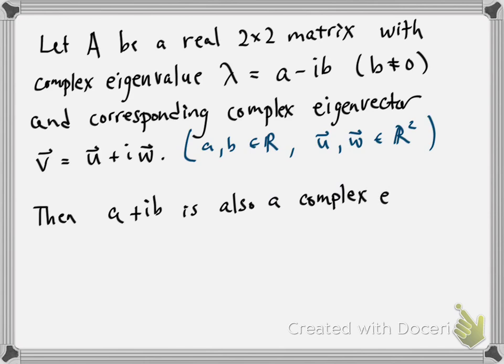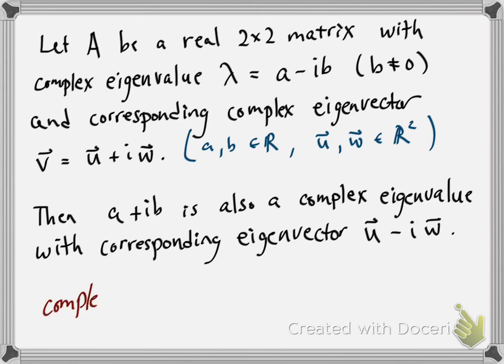In that case, we know that a + ib is also going to be a complex eigenvalue with corresponding eigenvector u - iw. So if I have a complex eigenvalue λ with eigenvector v, then the complex conjugate of λ is also an eigenvalue with corresponding eigenvector being the complex conjugate of v.